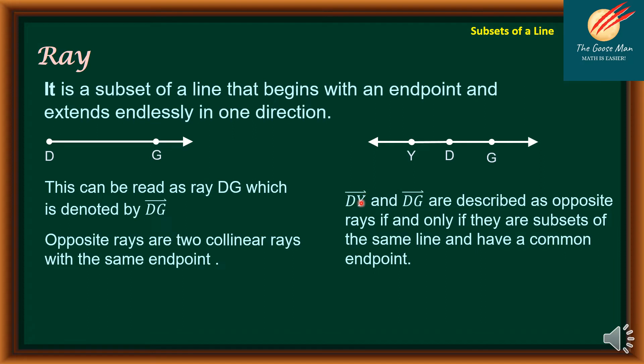Ray DY and ray DG are described as opposite rays if and only if they are subsets of a line segment and have a common endpoint. Take note that the common endpoint of ray DG and ray DY is point D.